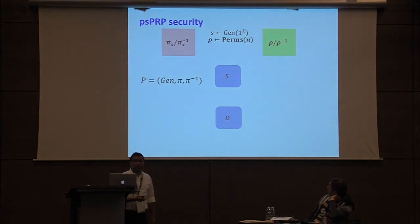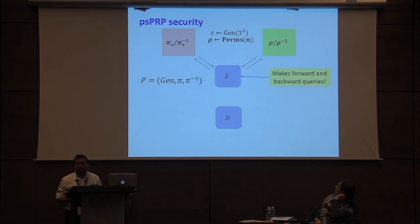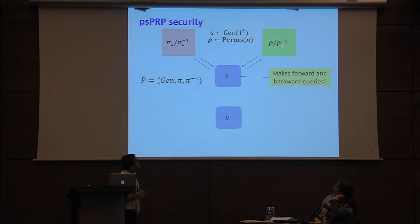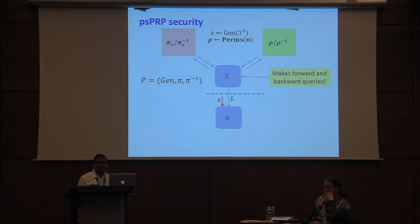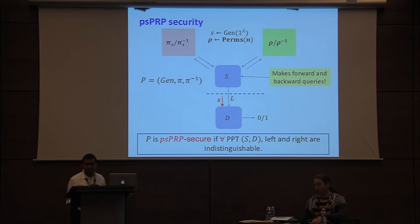To define PSPRP security, we adopt the same paradigm, except that now the source gets access to a seeded permutation, and hence we need to take care of both forward and backward queries. In the other world, it gets access to a random permutation rho and its inverse. The second stage proceeds as before: D gets the leakage and the seed, and outputs a bit B. We say that P is PSPRP secure if for all efficient sources and distinguishers these two worlds are indistinguishable.